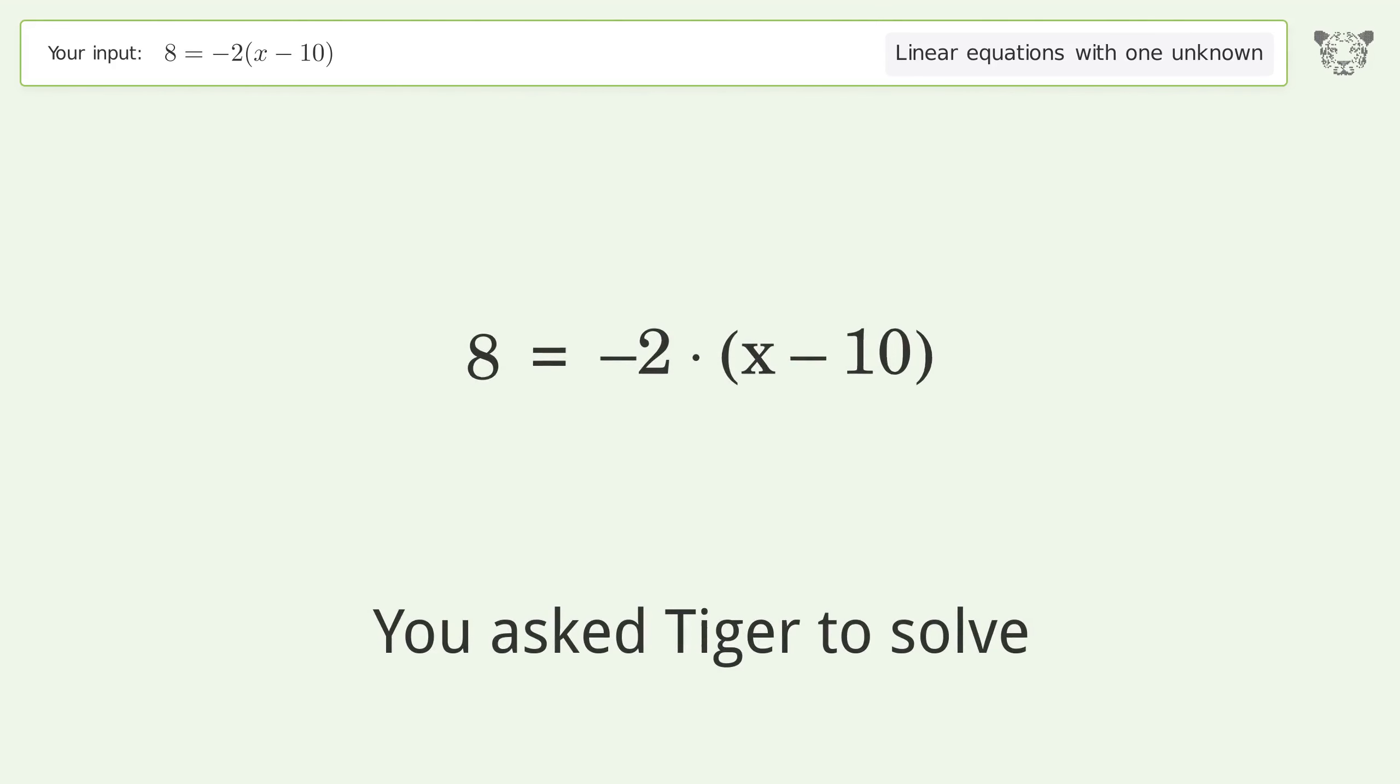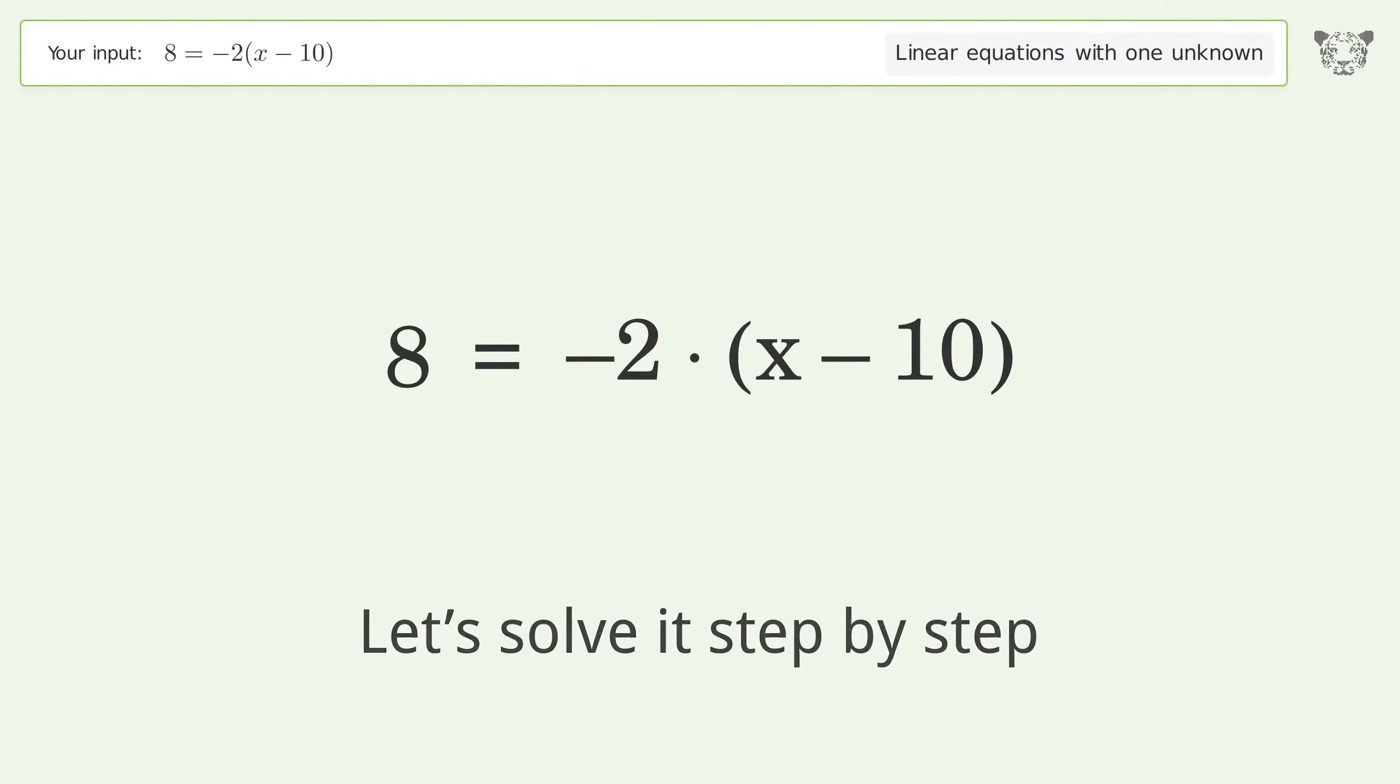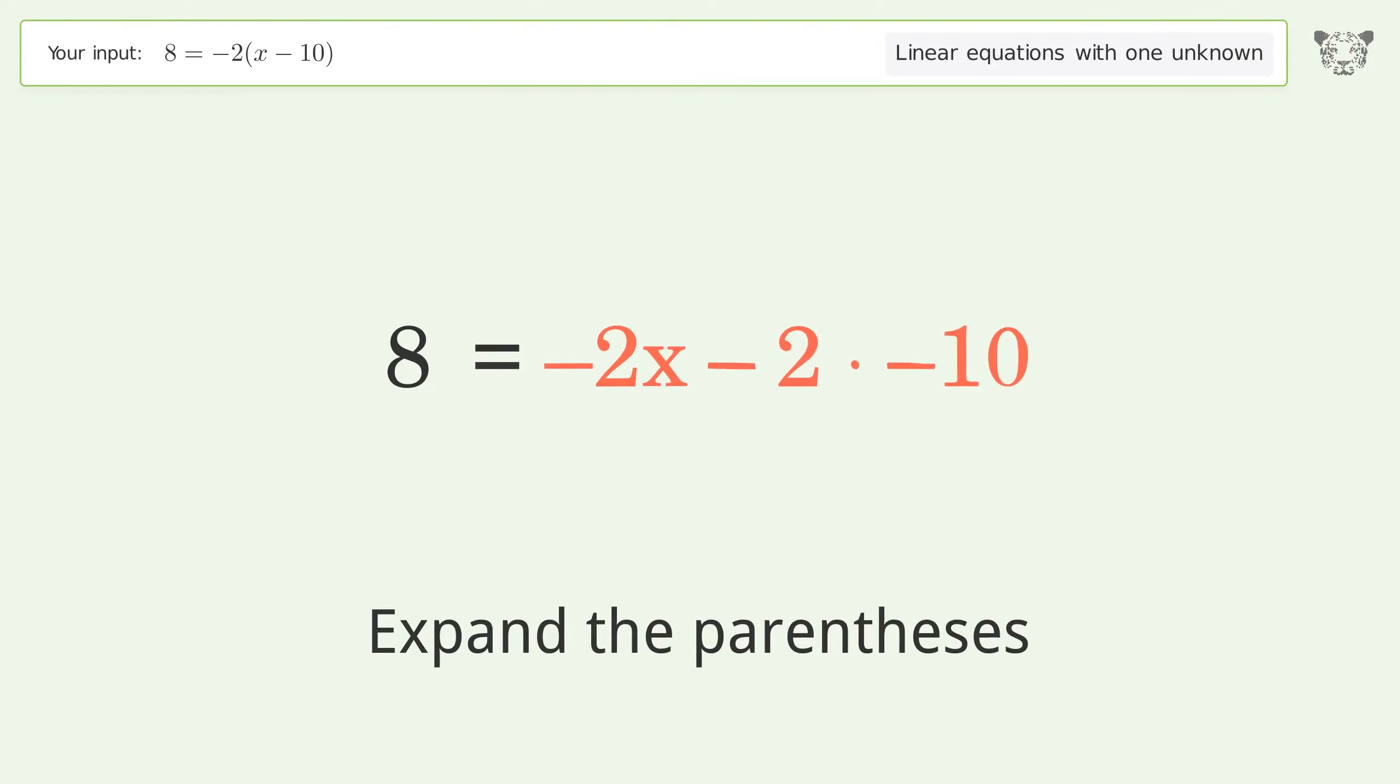You ask Tiger to solve this. This deals with linear equations with one unknown. The final result is x equals 6. Let's solve it step by step. Simplify the expression, expand the parentheses, simplify the arithmetic.